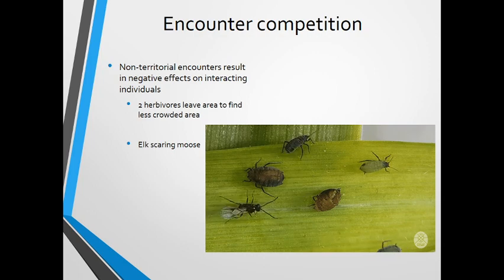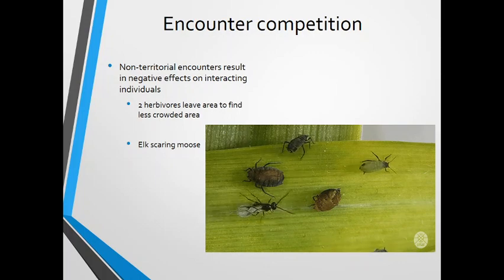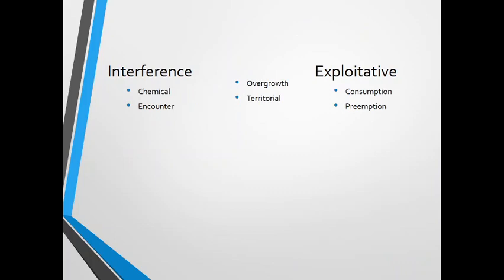When we look at all six types of competition mechanisms, chemical and encounter competitions are examples of interference. Consumption and preemption are exploitative. Overgrowth and territorial competition we can think of as either, depending on how aggressive the overgrowth or territorial defense is — they could be considered interference or exploitative competition.